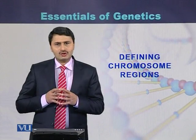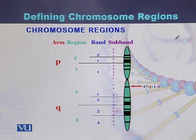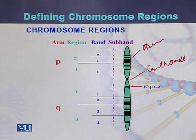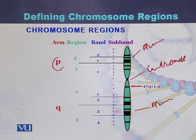Defining chromosome regions. A typical chromosome consists of a centromere present in the middle and two arms. One arm is usually short in nature and is called the P arm, while the longer one is called the Q arm.